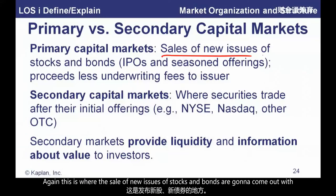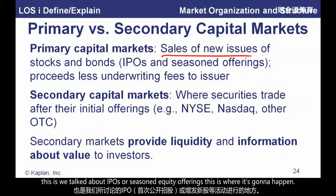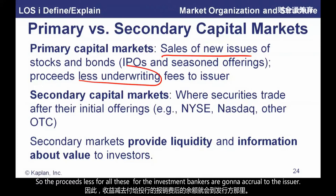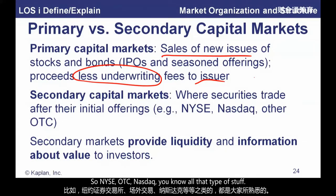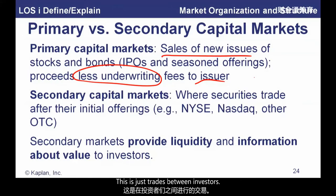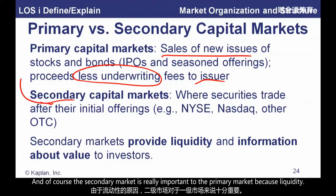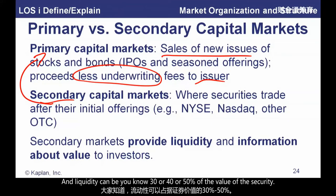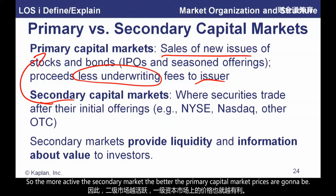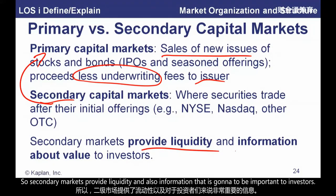Primary markets are where new issues of stocks or bonds come out — IPOs and seasoned equity offerings. The proceeds, less the investment bankers' fees, go to the issuer. Secondary markets — NYSE, OTC, NASDAQ — are where investors trade with each other. The secondary market is really important to the primary market because it provides liquidity to assets sold there. Liquidity can represent 30, 40, or 50 percent of the value of a security. The more active the secondary market, the better the primary capital market prices are going to be. Secondary markets also provide important price information.